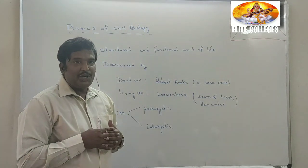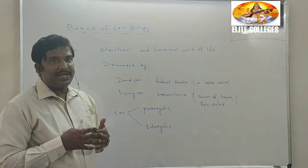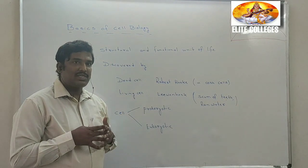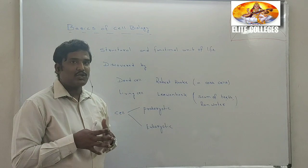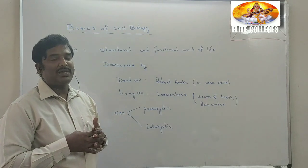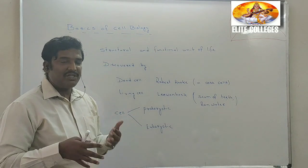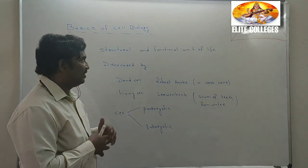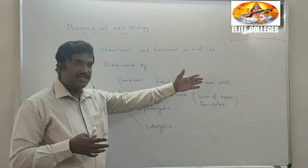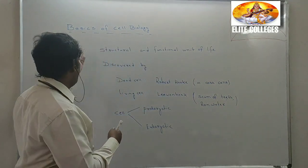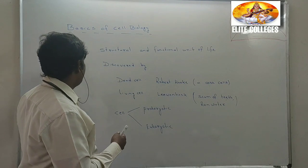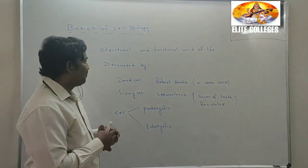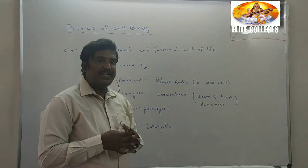You might be knowing about a neuron cell and how it appears. Similarly you can see about the stomata — the structure of stomata is different. Similarly, neurons in humans are in different shapes. They have different structures, different shapes, and their own functions. That is the reason it is given the definition as structural and functional unit of life.